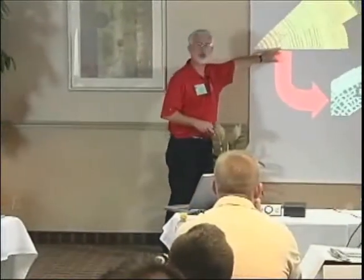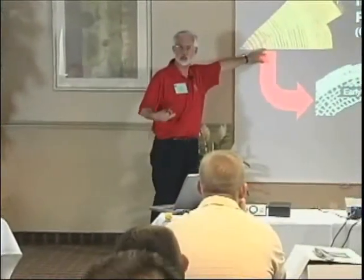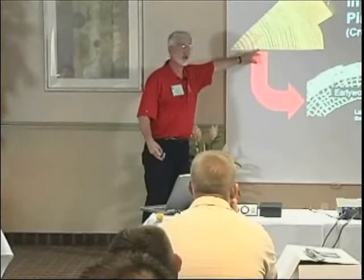For the early wood, you have a light color where density is low, and that dark band is the late wood where density is high. You can verify that with your thumbnail — it's a great density checker, always with you, always the same hardness. Try pushing it into the early wood of a piece of southern pine — you'll be able to dent it. Try pushing it into the late wood, the second half of that growth ring, and your thumbnail will bend first. There's a big density difference.